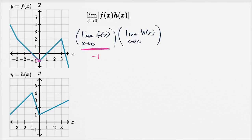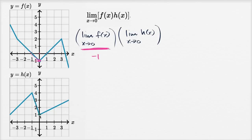Now what about h of x? As x approaches zero, the function is defined at x equals zero — it looks like it is equal to one, and the limit is also equal to one. We can see that as we approach from the left, we are approaching one, and as we approach from the right, we are approaching one. The limit equals the value of the function at that point because this is a continuous function. So this is one.